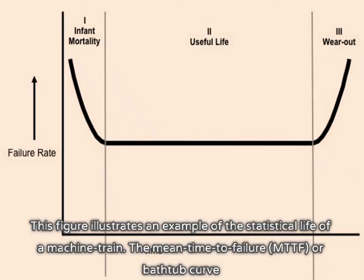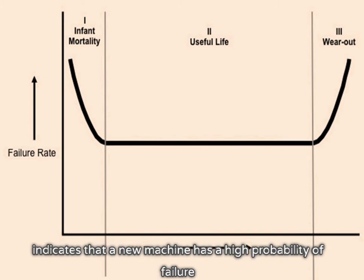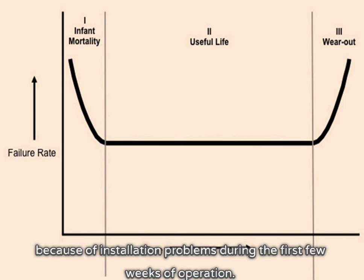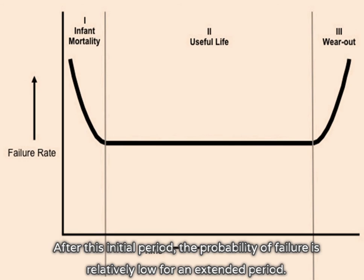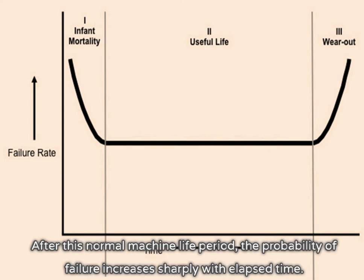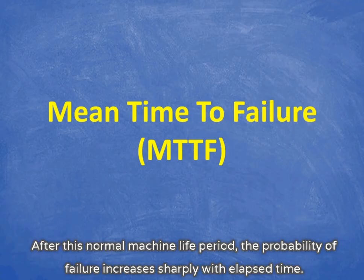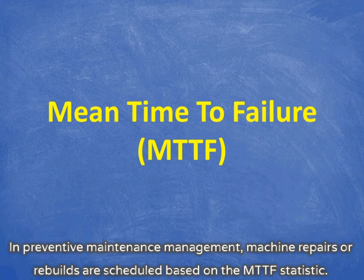This figure illustrates an example of the statistical life of a machine train. The mean time to failure (MTTF), or bathtub curve, indicates that a new machine has a high probability of failure because of installation problems during the first few weeks of operation. After this initial period, the probability of failure is relatively low for an extended period. After this normal machine life period, the probability of failure increases sharply with elapsed time. In preventive maintenance management, machine repairs or rebuilds are scheduled based on the MTTF statistic.